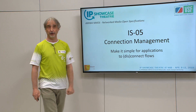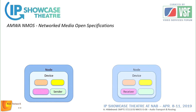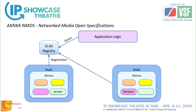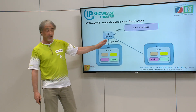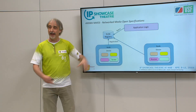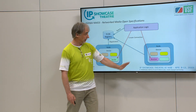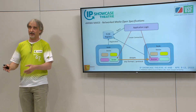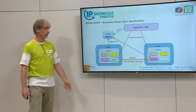IS-05 is designed to make it simple for applications to connect or disconnect streams or flows. A broadcast control system queries the IS-04 registry to know what resources are available. It then uses IS-05 to tell a sender and receiver to create a connection. The great thing is that all these NMOS specifications are independent of the actual stream format — not limited to AES 67, 2110, or any specific format. It's a very flexible principle.